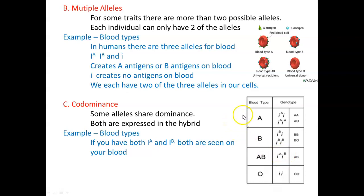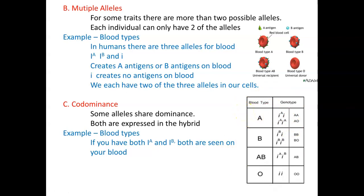Blood typing also shows regular dominance alongside multiple alleles and co-dominance, because the O allele — the little I — gets covered up if you have either the A or B allele. So if you have the allele for A and the allele for O, your blood type is A. You can be AA or AO to be type A. If you're type B, you can cover the O with a B, so BB or BO gives you type B. If you're AB, there's only one way — you have to have the A allele and the B allele. There's only one way to be type O, and that's to have two recessive O alleles. So blood typing really shows simple dominance, multiple alleles, and co-dominance.